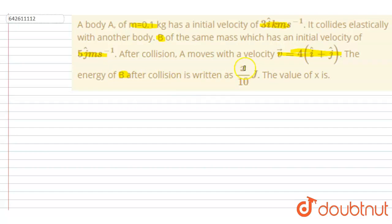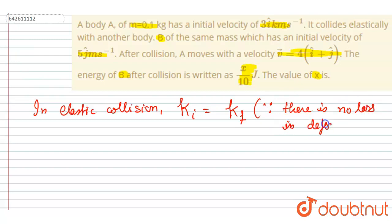Then you have to find out the energy of B after collision. If it is written as this, then x is what? So we know that in elastic collision, the loss of kinetic energy is zero. In elastic collision, initial kinetic energy equals final kinetic energy since there is no loss.